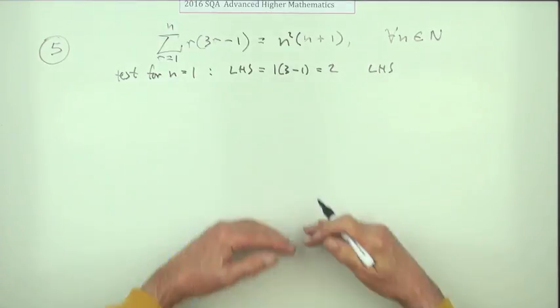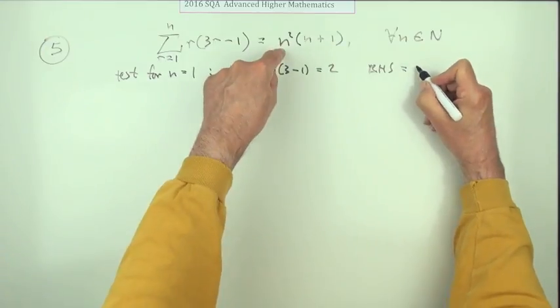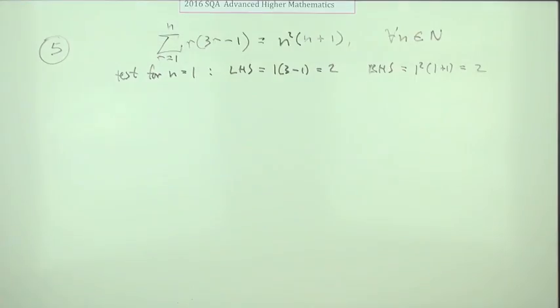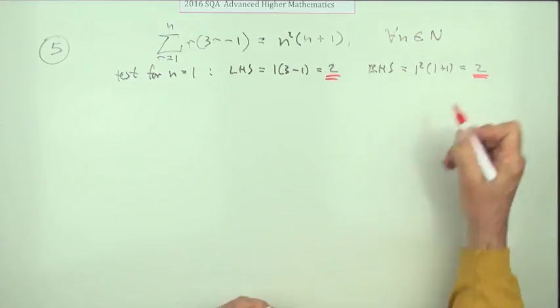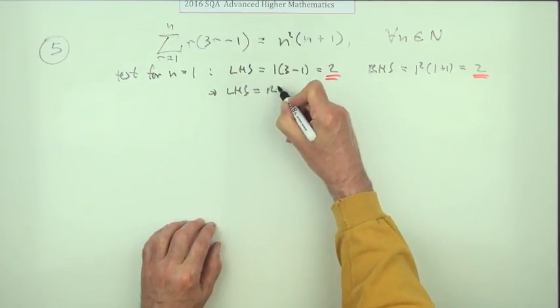Left hand side, I'm just doing that to save space. Right hand side would just be 1 squared times 1 plus 1 which equals 2. So now you can see left hand side equals right hand side.